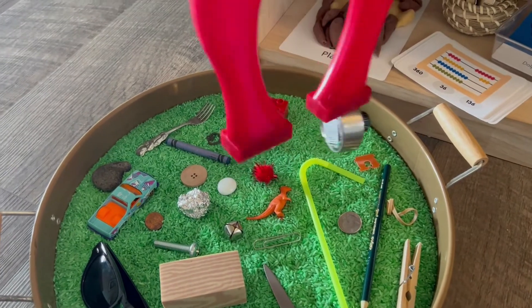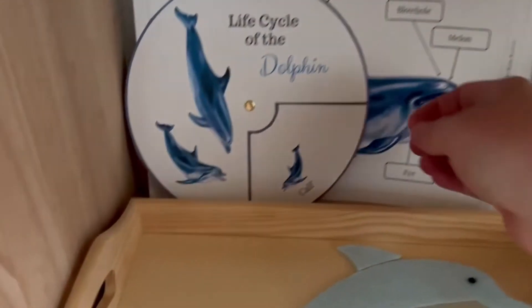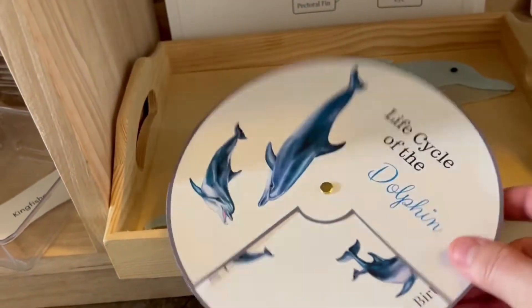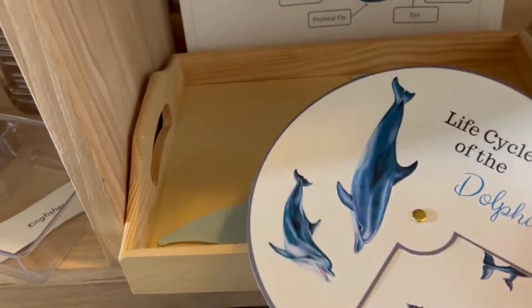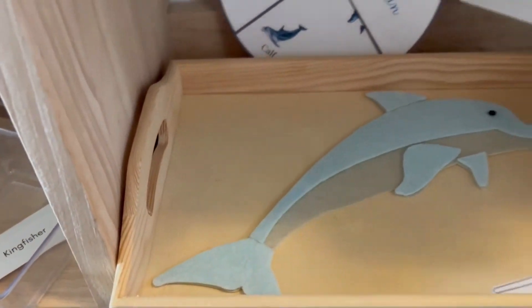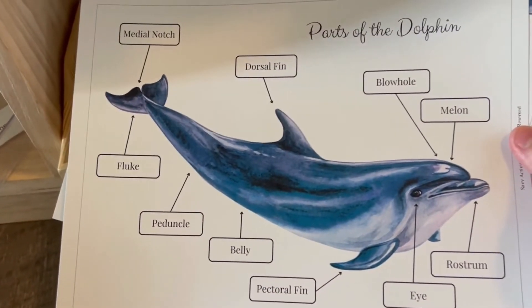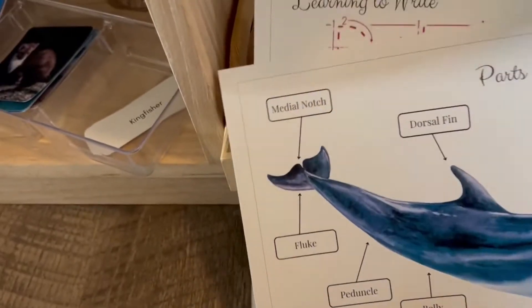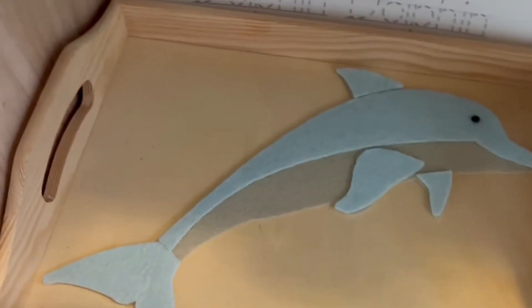Over here we have the life cycle of the dolphin — this is a little spinner card showing a calf, birth, and the stages of development. There's also a card showing the parts of the dolphin, with another version that has empty squares for students to match the label cards onto.